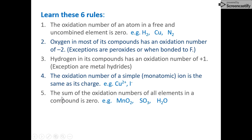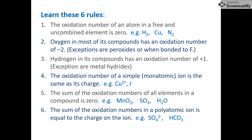If I don't know the oxidation number of an element in a substance, I can work it out. For example, in manganese dioxide, I can apply rule two to know that every oxygen atom is minus two, but I don't know manganese's. So I apply rule five: if I add up all the oxidation numbers of all the atoms in a neutral substance, the sum of those oxidation numbers is equal to zero. We will look at examples of this.